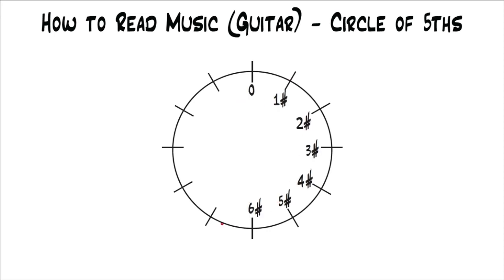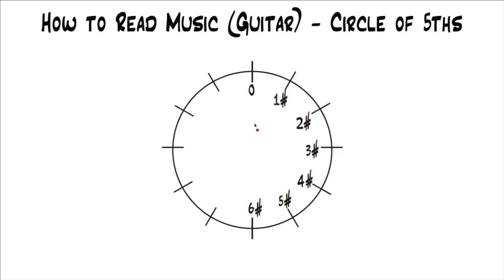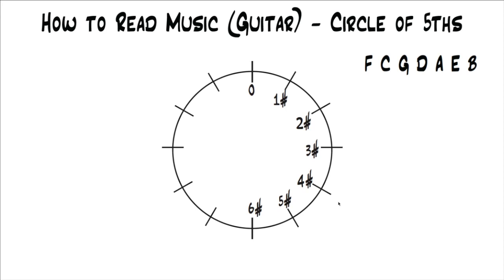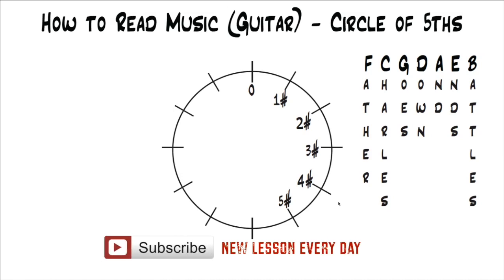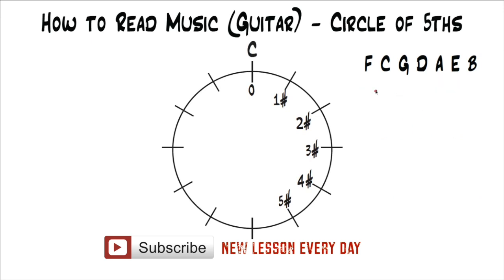The first thing we're going to fill in are the numbers, which represent sharps. Everything on this side is called the sharp side. The first one at 12 o'clock is zero, representing that whatever key is there has zero sharps or flats. Going clockwise, we add a sharp each time: one, two, three, four, five, six. The first thing to memorize is the letters F, C, G, D, A, E, B. A common mnemonic device is 'Father Charles Goes Down And Ends Battles.' There are other mnemonics you can use, but this is the most common one.